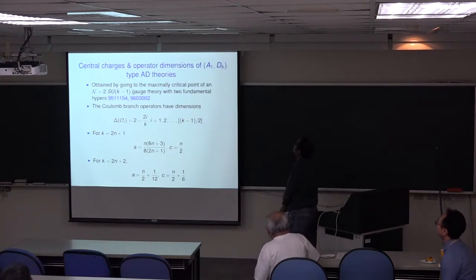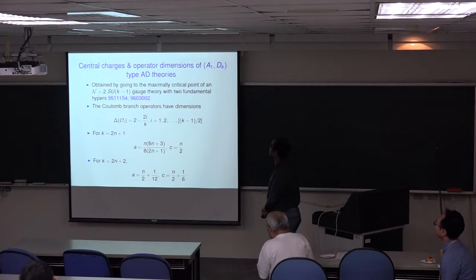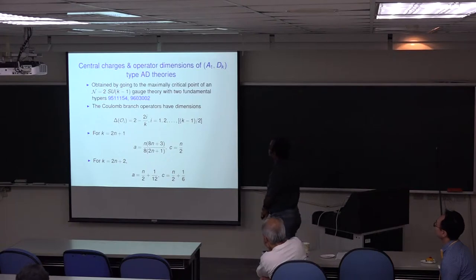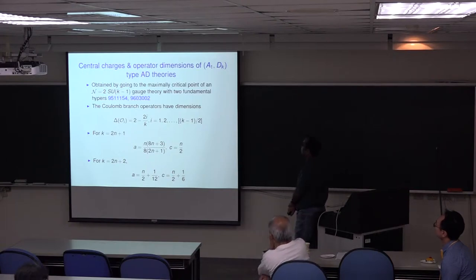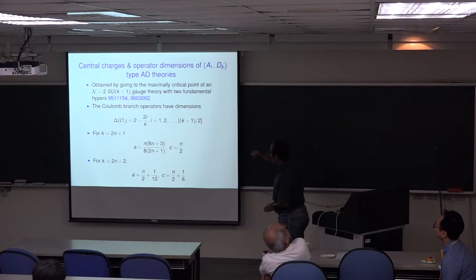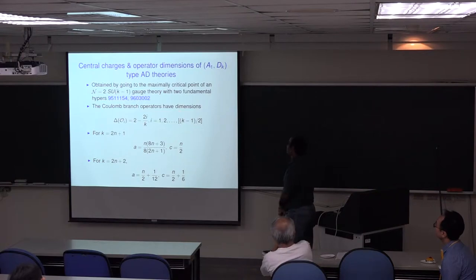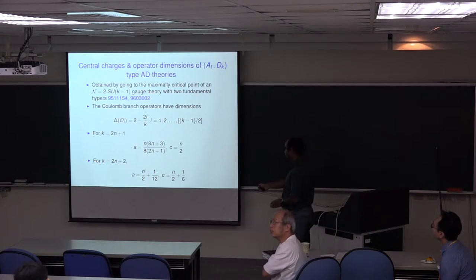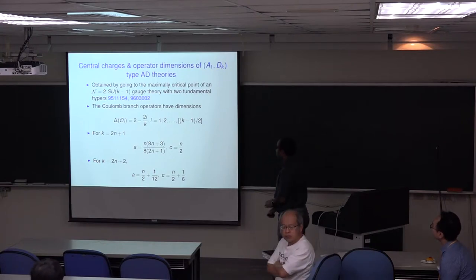Similarly, the central charges and operator dimensions of A1,DK type Argyres-Douglas theories are given here. These theories were obtained by going to the maximally critical point of N equals 2 SU(K-1) gauge theory with two fundamental hypers. The Coulomb branch operators have dimension 2 minus 2i over K, where i runs up to the floor of (K-1)/2. When K is odd, the central charges are of this form. When K is even, the central charges are of this form.